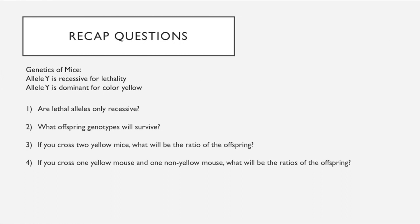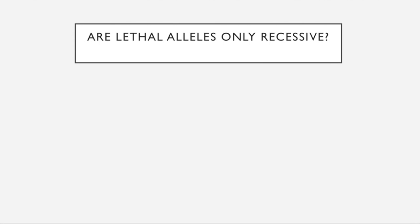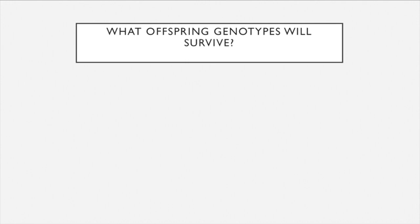Now we're going to go over some recap questions. In mice, the allele big Y is recessive for lethality but dominant for the color yellow in fur. Question one: are lethal alleles only recessive? The answer is no — they can be dominant lethal alleles as well, where only one copy of the allele is needed to cause death. However, these alleles are never seen in the offspring, since both homozygous and heterozygous genotypes containing the allele will result in lethality. In this class, we will mostly be focusing on recessive lethal alleles.